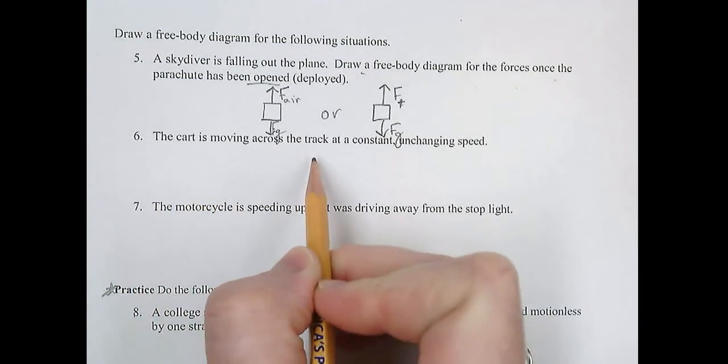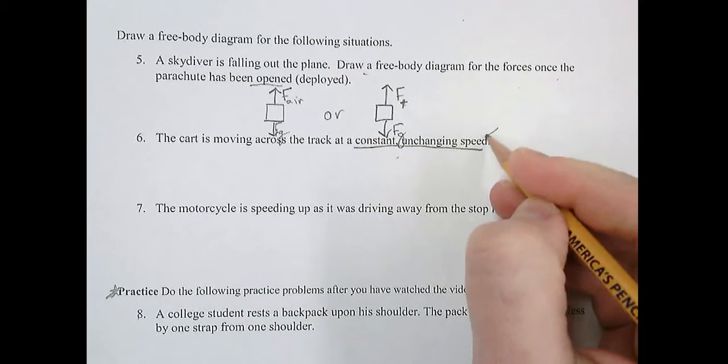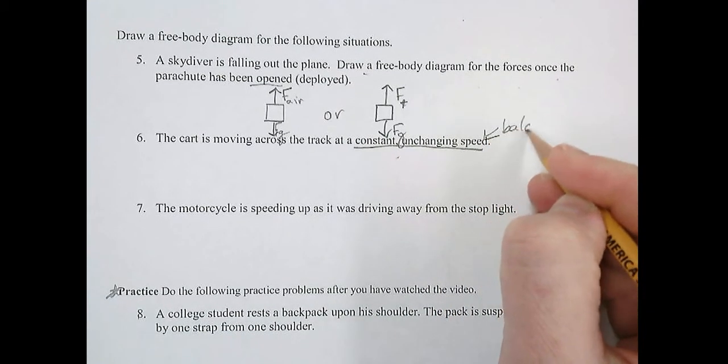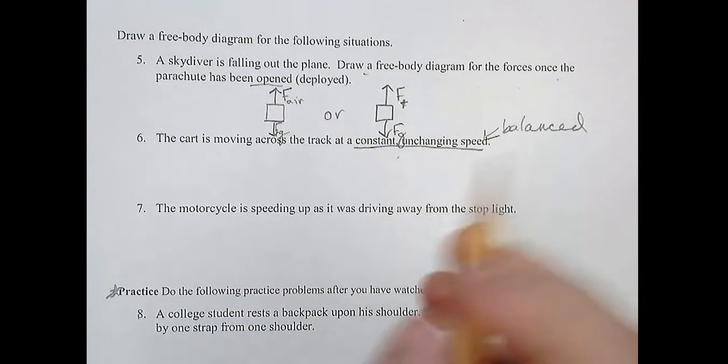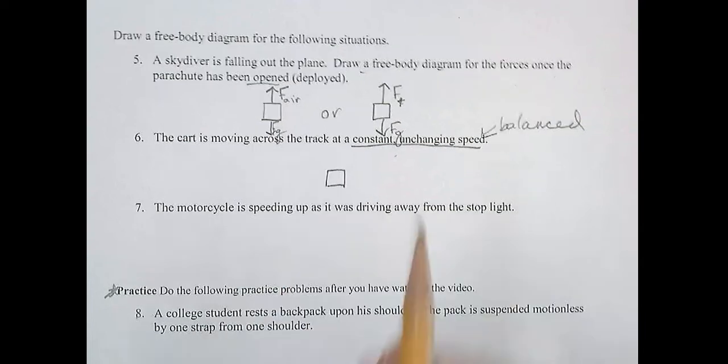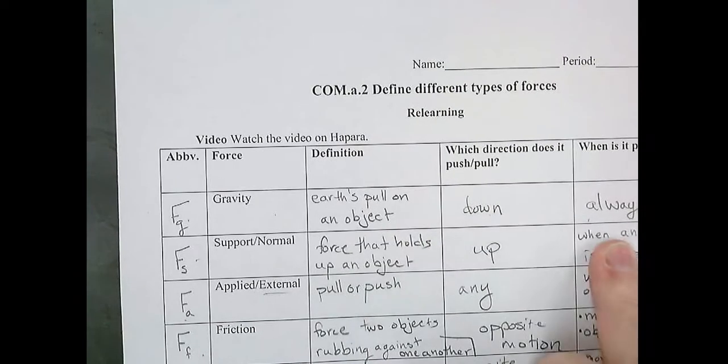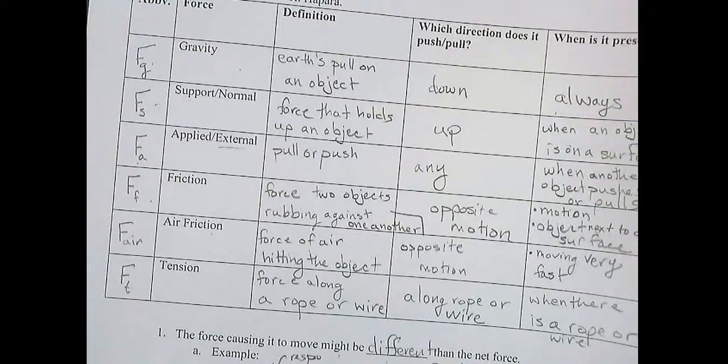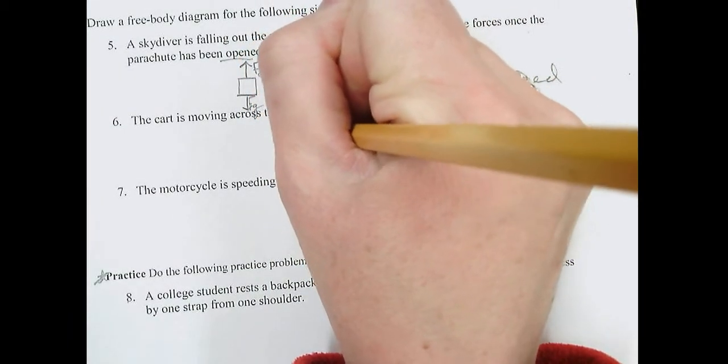The cart is moving across the track at a constant, unchanging speed. So this tells us that the forces are balanced. And we're talking about the carts like in our lab. So we're going to go ahead and draw our box and we're going to go through. Is there gravity? Well, there's always gravity. So I'm going to do FG. Is there support force?